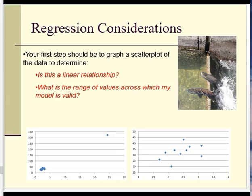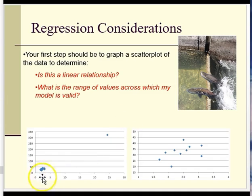Those are your regression basics, but there are a couple of additional considerations to keep in mind when running a regression model. First, remember this only works for linear relationships. Your first step should always be to look at a scatter plot to confirm you really do have a linear relationship. You also want to consider the range of values covered by your calibration data — all of the observations that go into calculating the regression formula. Your regression is only ever going to be valid for that same range of input data.